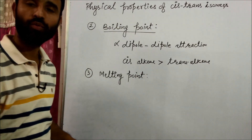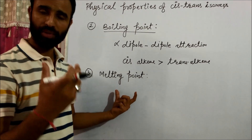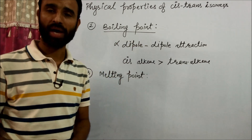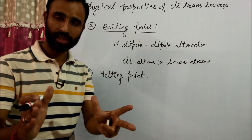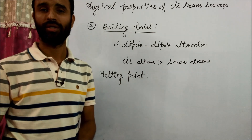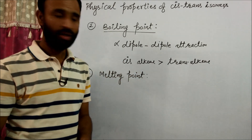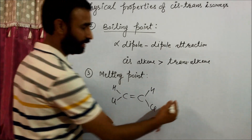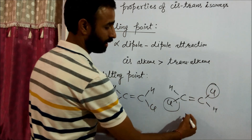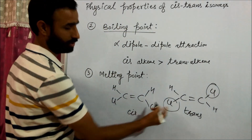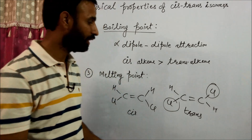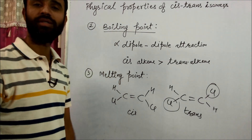The third property is melting point. Melting point mainly depends on the symmetry of the molecule, or how tightly it is packed in the crystal lattice. A more symmetrical molecule fits better in the crystal lattice and has a higher melting point. Trans alkene is more symmetrical than cis, because both groups are on opposite sides. So trans alkene fits better in the crystal lattice, has higher lattice enthalpy, and that is why trans alkene has a higher melting point than cis alkene.